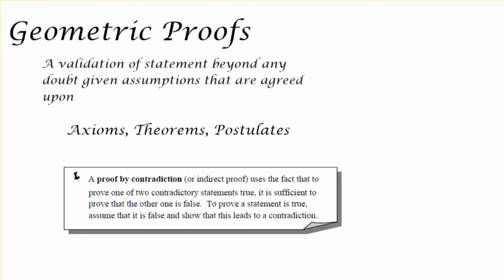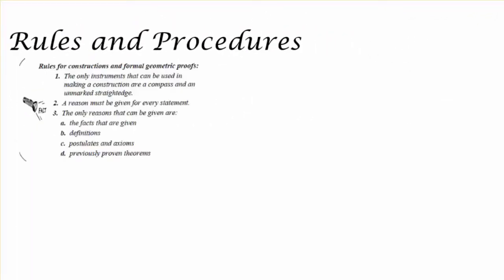One particular type of proof is a proof by contradiction, which uses the fact that to prove one or two contradictory statements true is enough to prove another one is false. This is just one of many types of proofs and methods that we use to prove statements true.